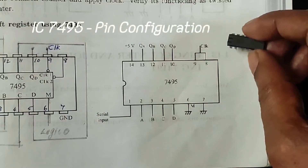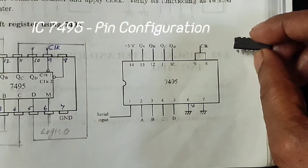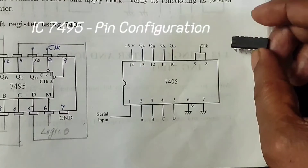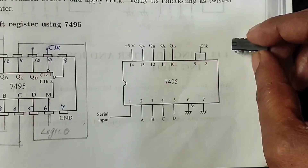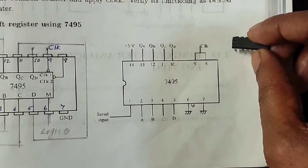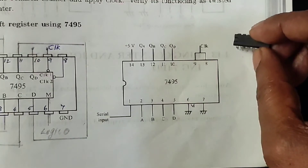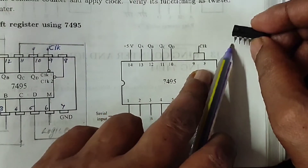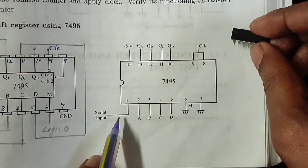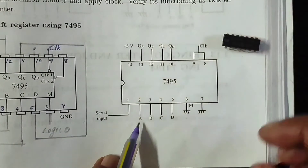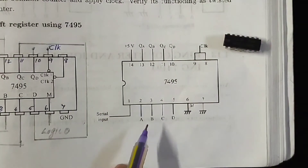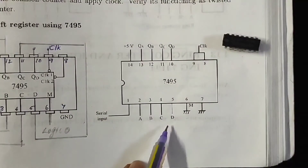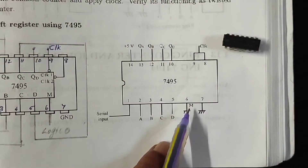Let's look at the pin configuration of the IC7495. This IC has a 14-pin configuration and is a negative-edge-triggered register IC. Starting from the groove side, pin 1 is used for serial input. Pins 2, 3, 4, and 5 are used as data inputs. Pin 6 is the mode control pin.